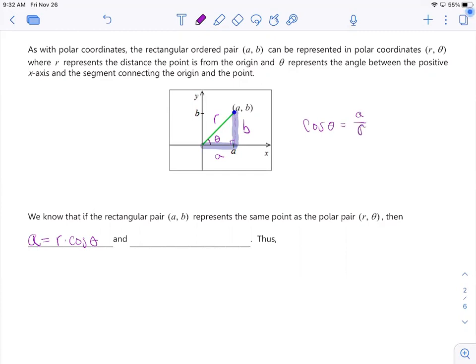So if you isolate that A, we get R times cosine theta. Well, now if you find sine of theta, that definition is opposite over hypotenuse. Isolate that B, you would multiply both sides by R. That's why we get B equals R times sine of theta.